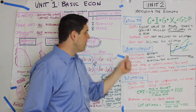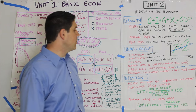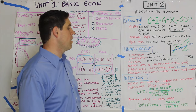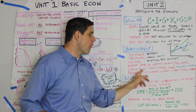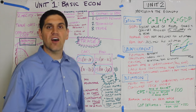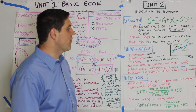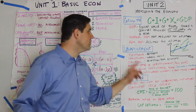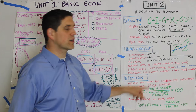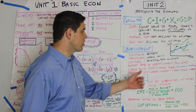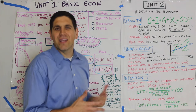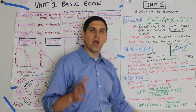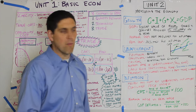Unemployment — there's three types: frictional, structural, and cyclical. If you add up all the frictional and structural, you come up with the natural rate of unemployment. Also remember, the labor force participation rate is the percent of people who are eligible to work who are actually working. The big problems with the unemployment rate are discouraged workers and part-time workers. Discouraged workers are people who should be considered unemployed but are not looking for work. Part-time workers are counted as fully employed even though they want more hours.